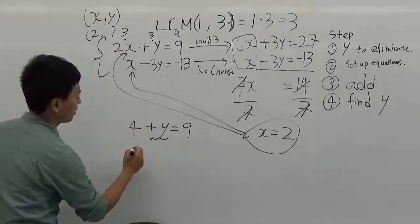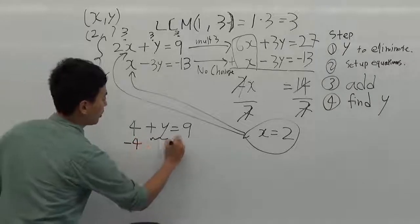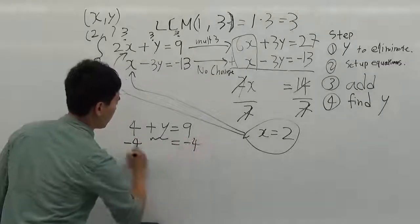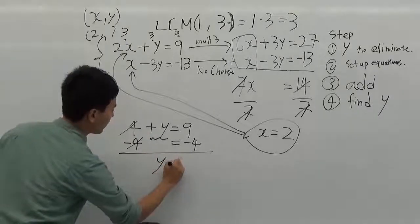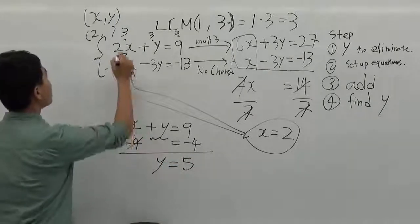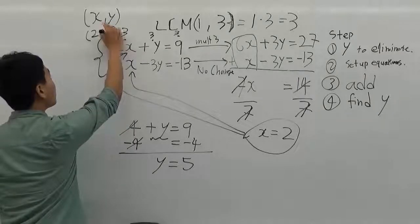To get the y, I'm going to subtract 4 on both sides. So we'll be cancelled. And our y is 5.